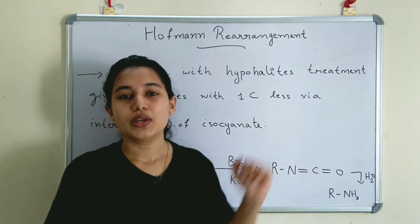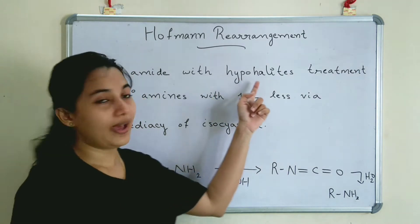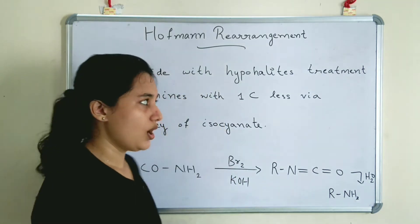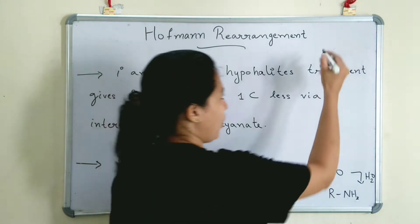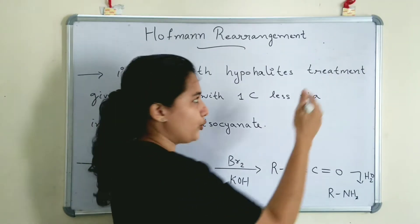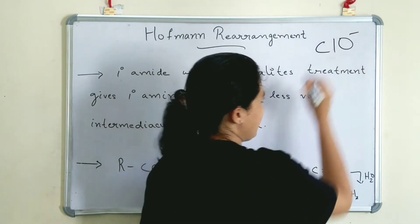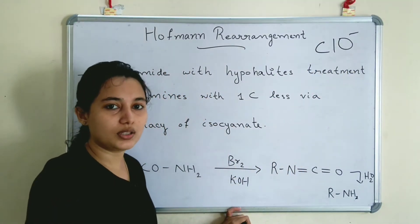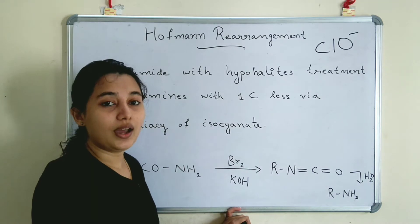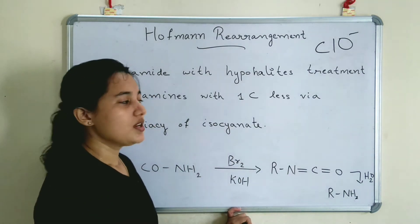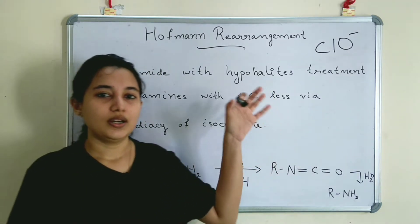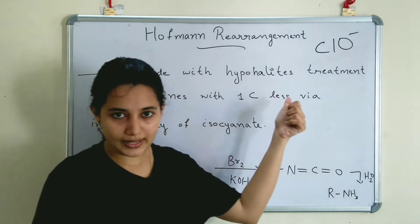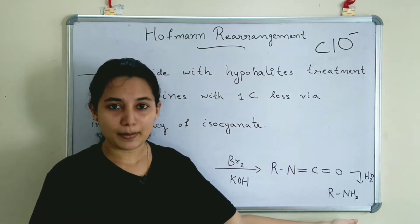What are the reagents? The reagent is hypohalite. Hypohalite means an oxyanion with a halogen — for example, ClO⁻ (chlorine and oxyanion). So Hoffman Rearrangement is the conversion of a primary amide with a hypohalite giving a primary amine.